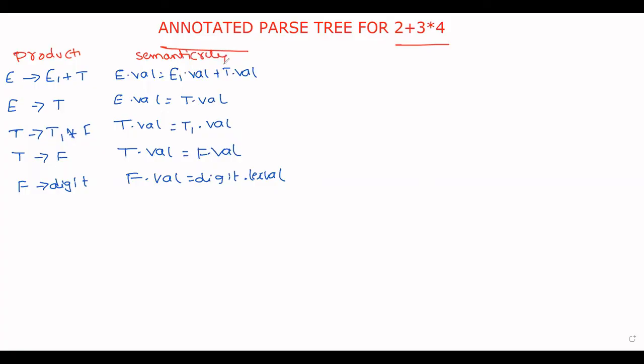We already know how to construct an annotated parse tree. Simply first construct the parse tree for the given expression. After completion of the parse tree, write down the values for each and every node, that means the attributes for each and every node. Then it becomes the annotated parse tree.